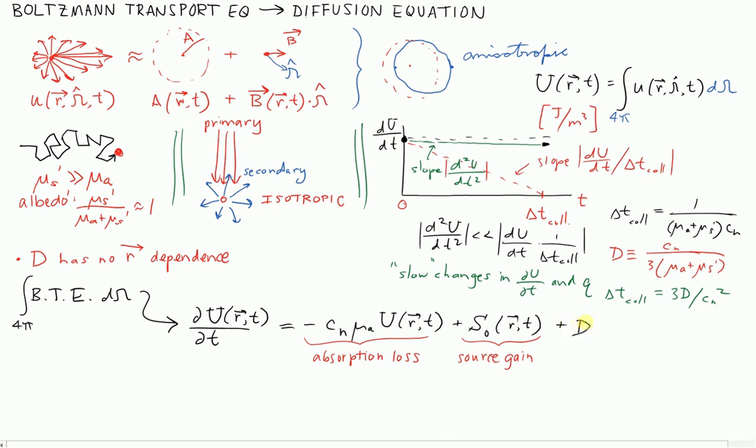And the diffusion term now comes out of the math of this. It ends up looking like this. And this is not obvious that it's a second derivative spatially. But this is our diffusion term.